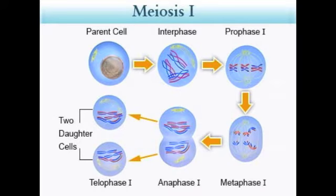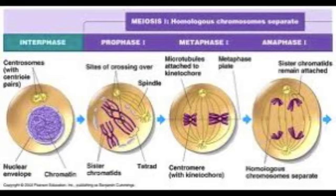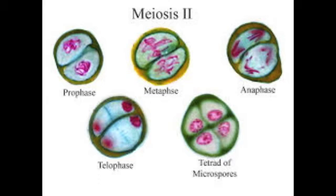In meiosis I, it is exactly like mitosis with each of the phases, except there are two differences. One difference is that in metaphase, the chromosomes line up in a double row across the metaphase plate, and the homologous chromosomes line up together. The other difference is that instead of having two copies of each chromosome, the newly formed cells have one copy of each chromosome. In meiosis II, the similar process of mitosis occurs again, doing the same as meiosis I, but the end product is different since the amount of chromosomes are halved again.